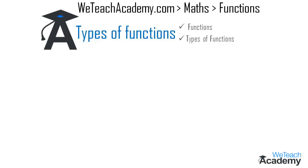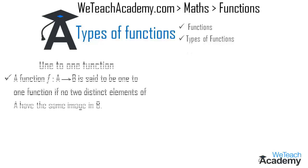The first function is the one-to-one function. A function f from A to B is said to be a one-to-one function if no two distinct elements of A have the same image in B.